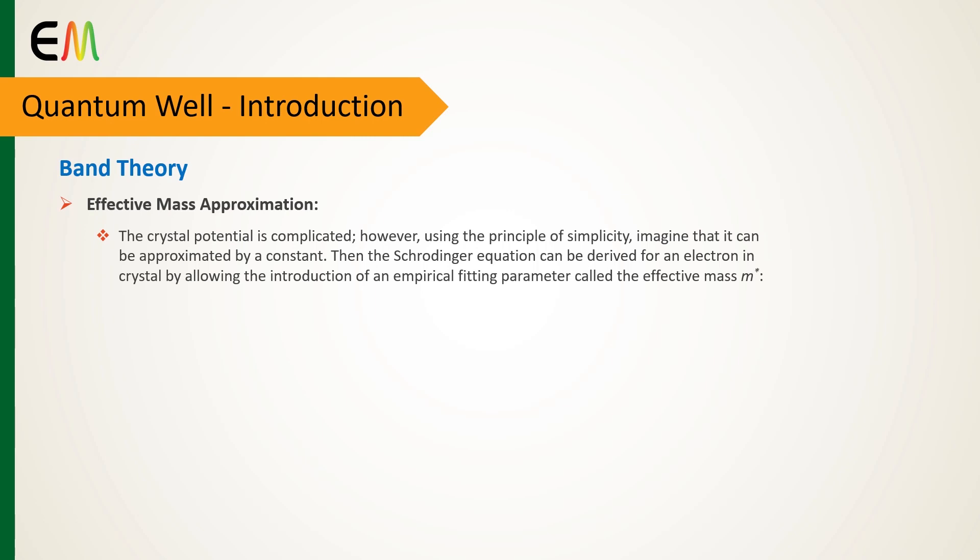Then the Schrödinger equation can be derived for an electron in a crystal by introducing an empirical fitting parameter called the effective mass m*.